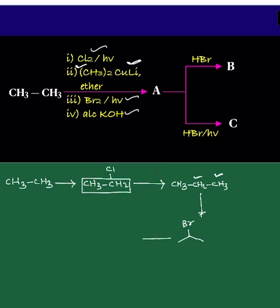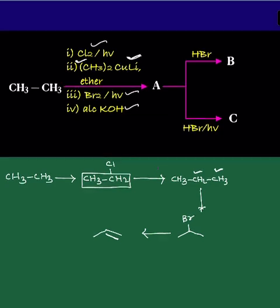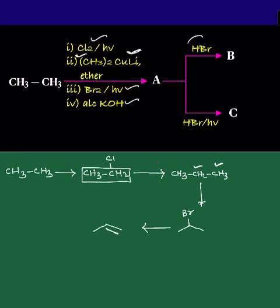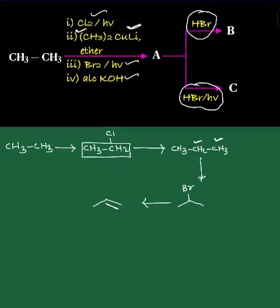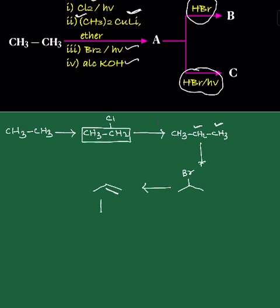This causes dehydrohalogenation, an elimination reaction. Hence, it will give you propene. Then propene is treated with HBr in the absence of sunlight. In another path, it is treated with HBr in the presence of sunlight.